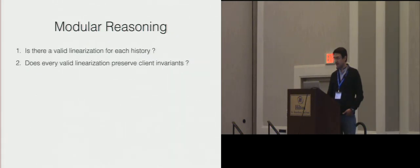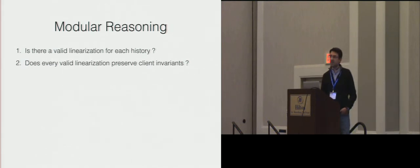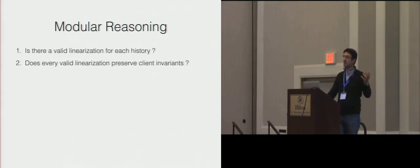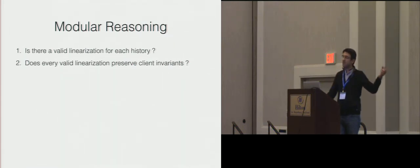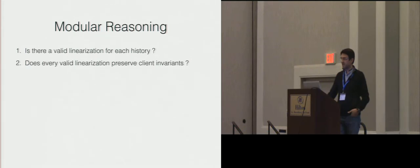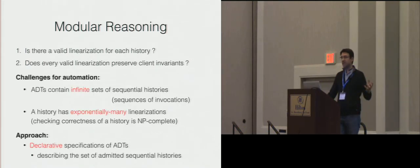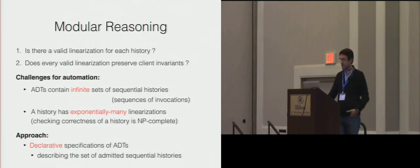These ADT specifications will allow us to decouple the reasoning about object implementations from the client code. The verification problem reduces to two questions: whether, for every history, there is a valid linearization, and whether every valid linearization preserves the client invariants. If we are interested in automated verification, there are typical challenges: abstract data types in general contain infinite sets of sequential histories, and checking the correctness of a single execution of a concurrent object is NP-complete, so it's intractable.